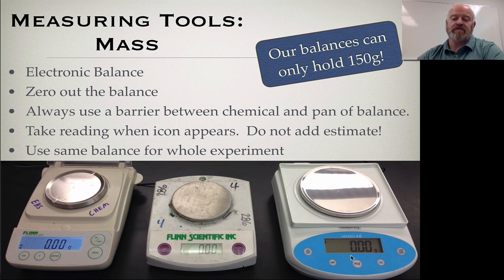Do not add an estimate here, because for a balance that does it electronically, it's doing the estimating for you as part of its circuits, trying to make sure to get that last digit as precise as it possibly can for you. And then last but not least, use the same balance for the whole experiment. When you're working with balances, because there are slight differences between them, and they may not all be calibrated perfectly the same, by using the same balance, you're minimizing error the whole time through.